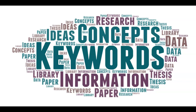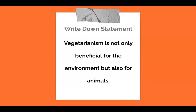Since we'll be discussing vegetarianism, you can count that as your first keyword. This is a pretty broad topic though, and if you search it alone, you might get thousands and thousands of articles, so we'll want to come up with a few keywords that you can search. We can start by taking your thesis or research question and narrow down the big ideas from there. For example, let's say I'm writing a paper and my thesis is 'vegetarianism is not only beneficial for the environment but also for animals.'